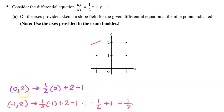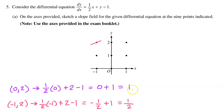At the point (0, 2), we have one-half times zero plus 2 minus 1. This equals zero plus 1, which equals 1. So draw a slope of 1, a 45-degree angle.